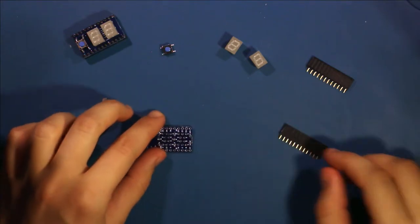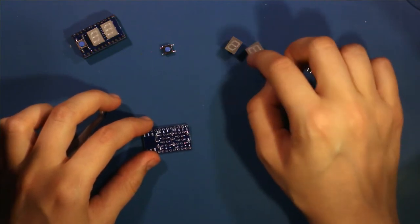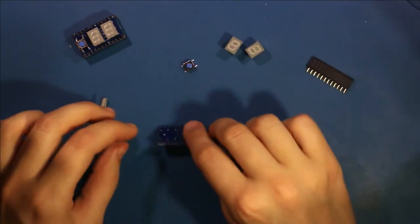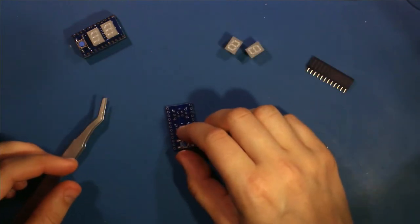So now that the resistors are soldered on, the next step is to solder on either the numeric displays or the button. I'm going to start with the button just because I feel like it.